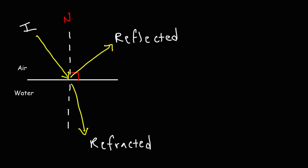The angle of incidence is the angle between the incident ray and the normal line — let's say that's 45 degrees. According to the law of reflection, the angle of incidence is the same as the angle of reflection, so these two angles must be equal to each other.